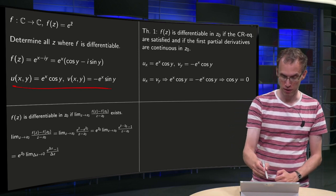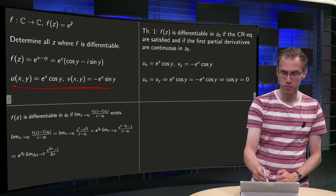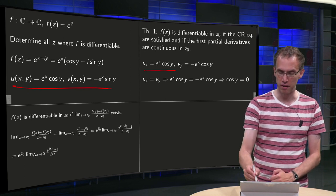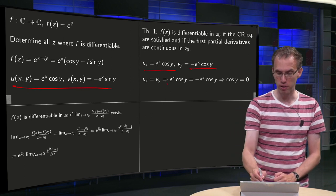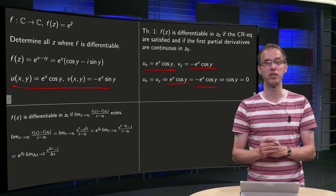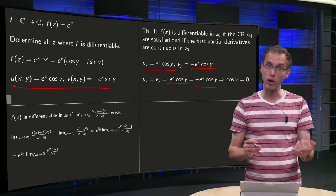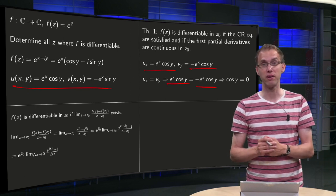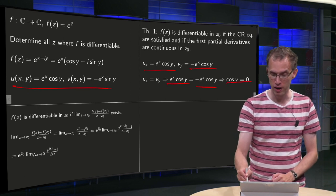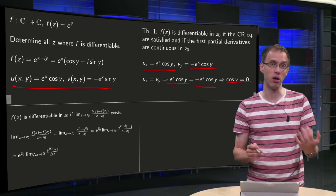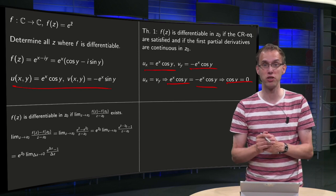So we can compute uₓ and vᵧ, and Cauchy-Riemann says uₓ equals vᵧ, so e^x cos y equals minus e^x cos y, or 2e^x cos y equals zero. Well e^x is never zero, so that means cos y has to be equal to zero. Well okay, there are y such that this holds.